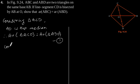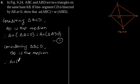Similarly, considering triangle BCD, BO is the median. Therefore, area of triangle BCO is equal to area of triangle BDO. Let's call this equation 2.